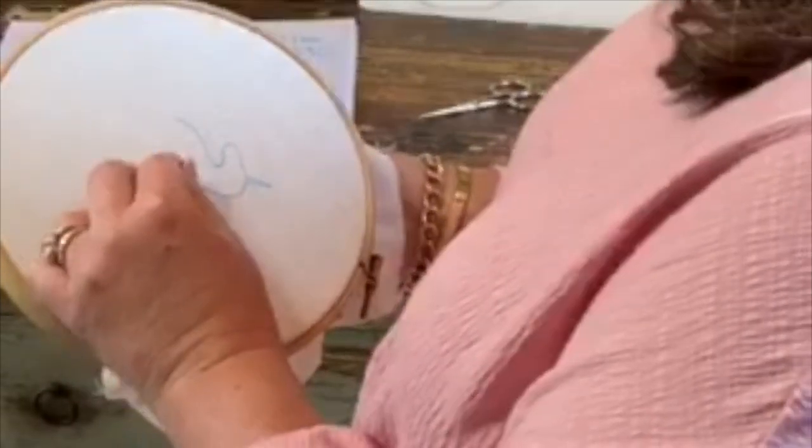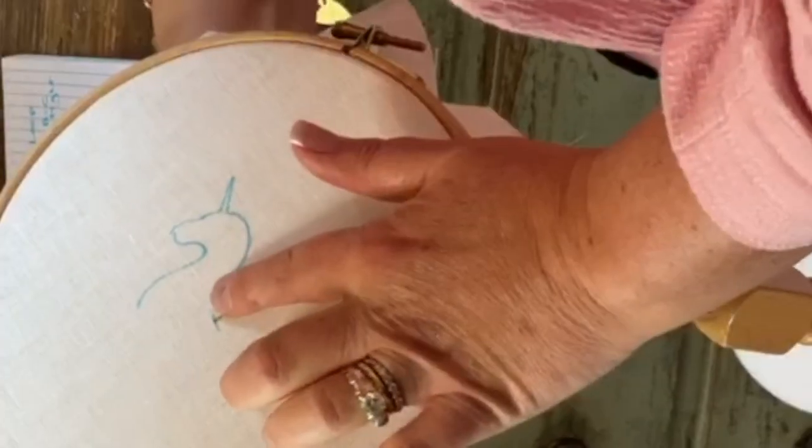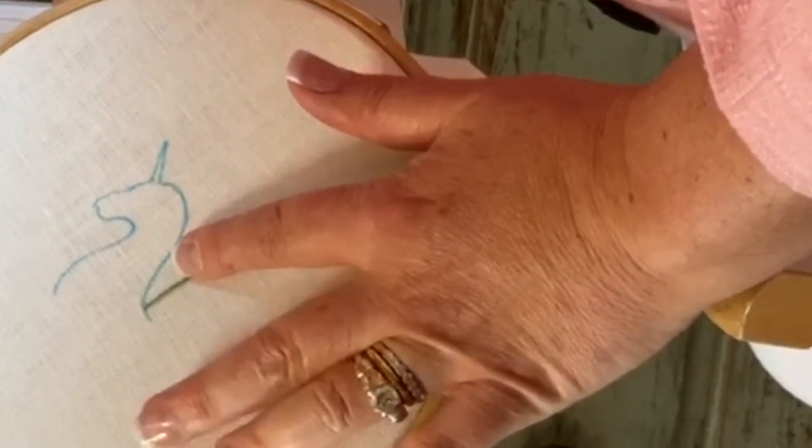So to begin you're going to start at the nape of the neck and we're going to take the thread down from the top and you're going to leave just a little bitty tail as part of the mane and that would be B.